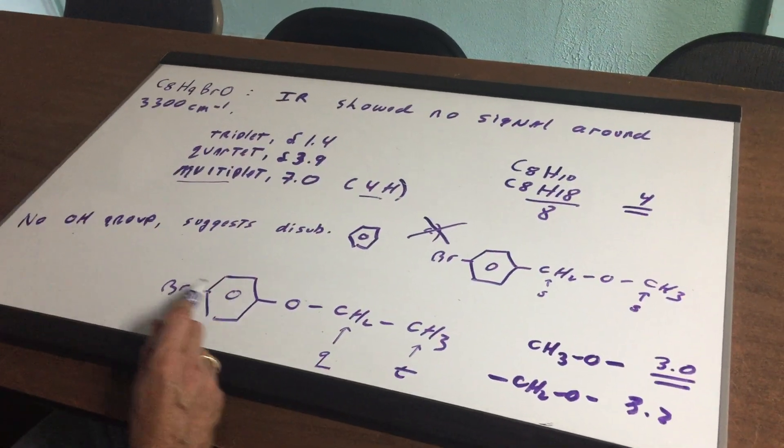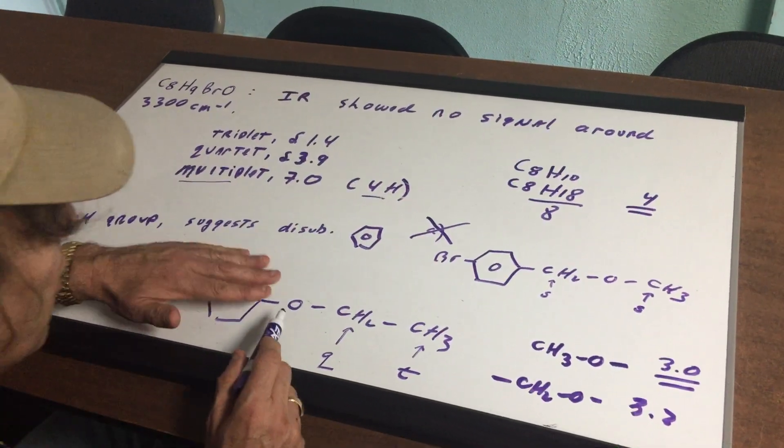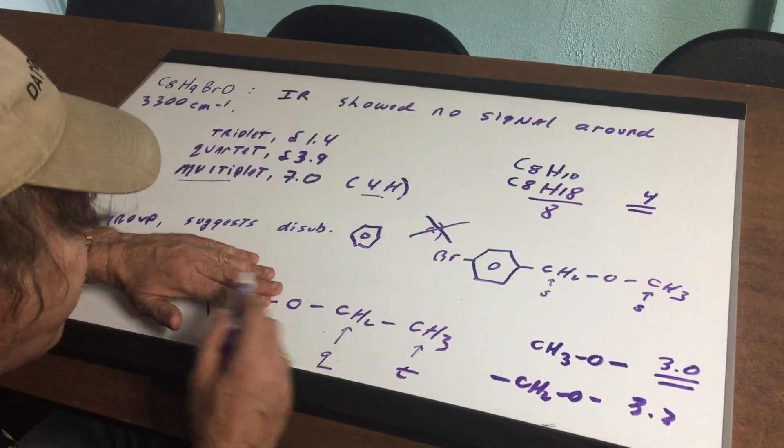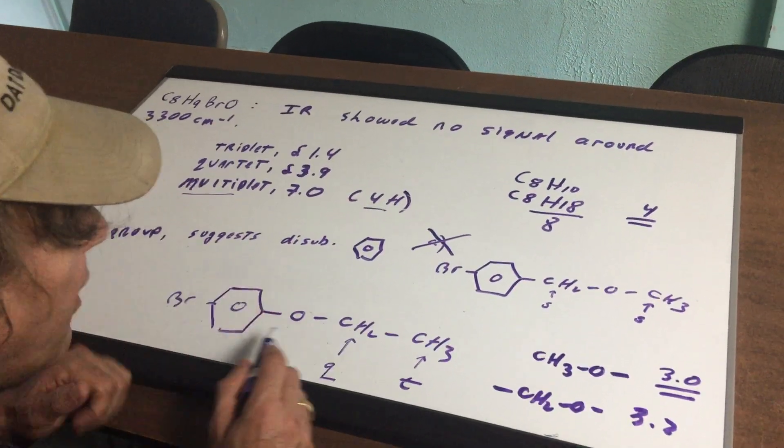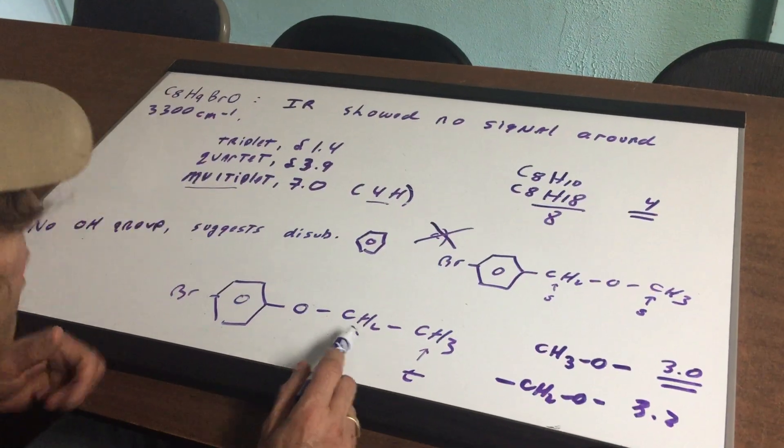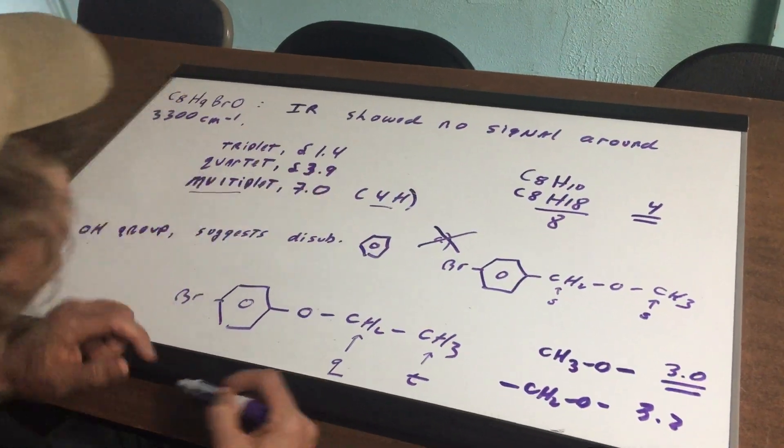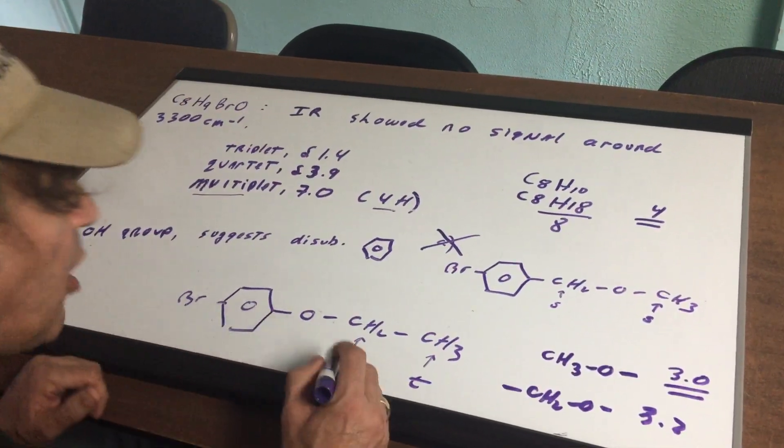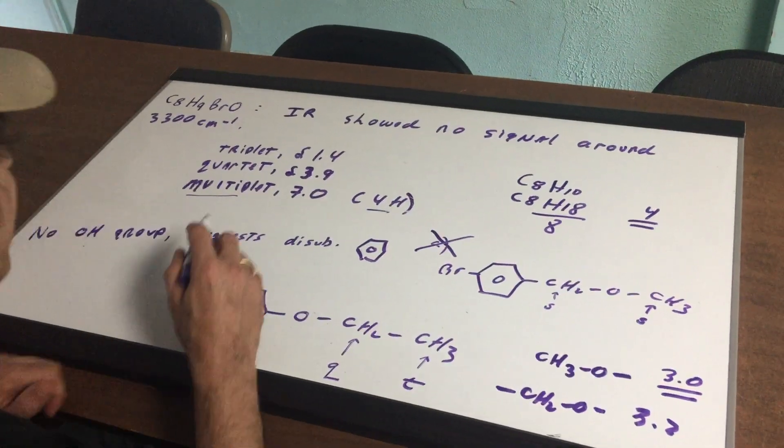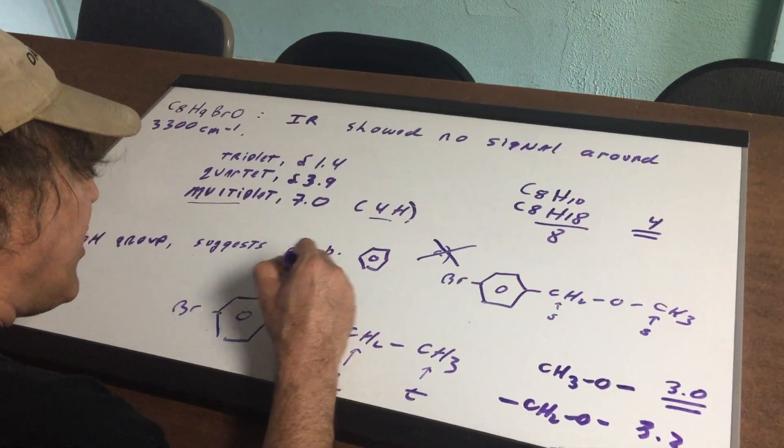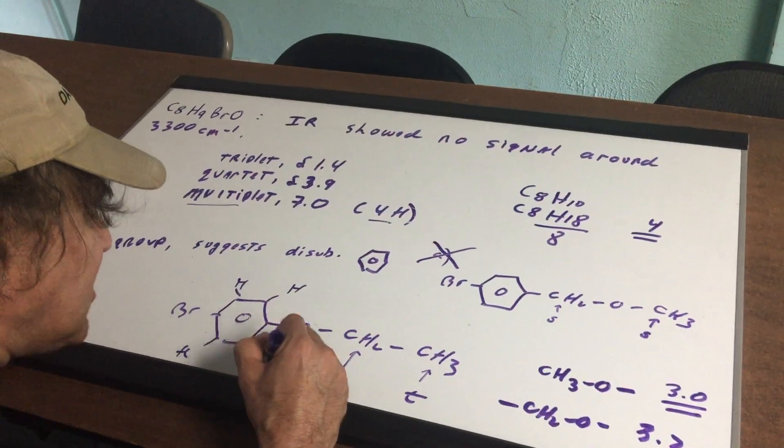But notice there's a benzene ring and a bromine, which is an additional negative group. So I would expect that this quartet to be closer to four. And as you can see, the quartet is at 3.9. So this checks out. And then finally, four H's. There are indeed four H's.